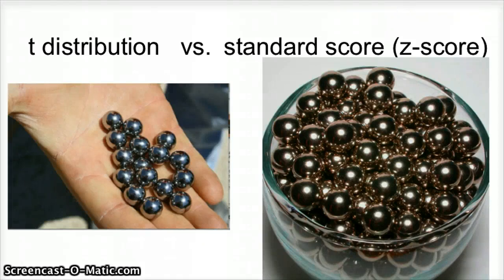All right, t-distributions versus a standard score. So when do we use the t-distribution as opposed to when do we use a z-score? And it ultimately comes down to this.